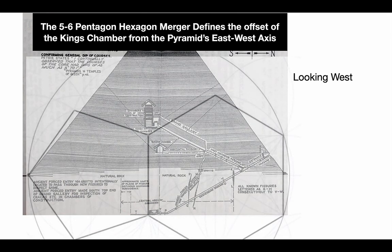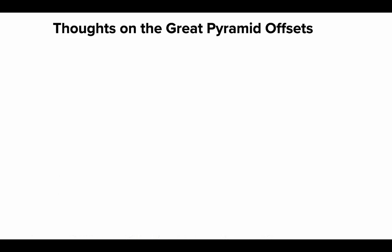That got me thinking — what about the hexagon/pentagon? Does that also define this offset from the east-west axis? Sure enough, you can see where the Queen's Chamber is — that's the center of the pyramid. The merger of the hexagon and pentagon, the meaning of life, the point where heaven and earth meet together, goes right through the center of the King's Chamber. Amazing.